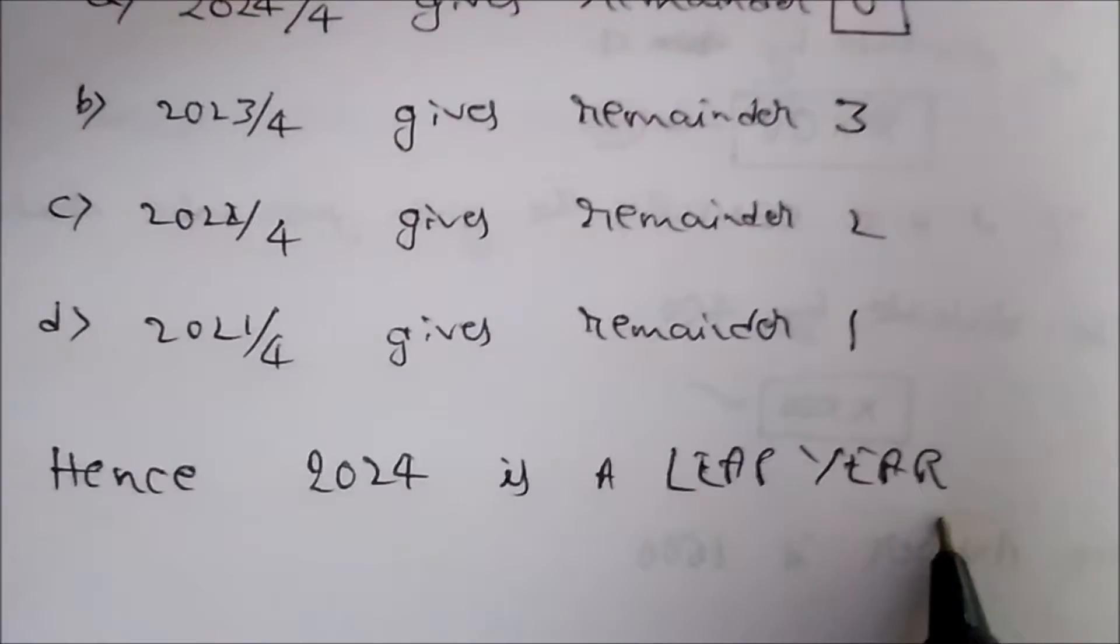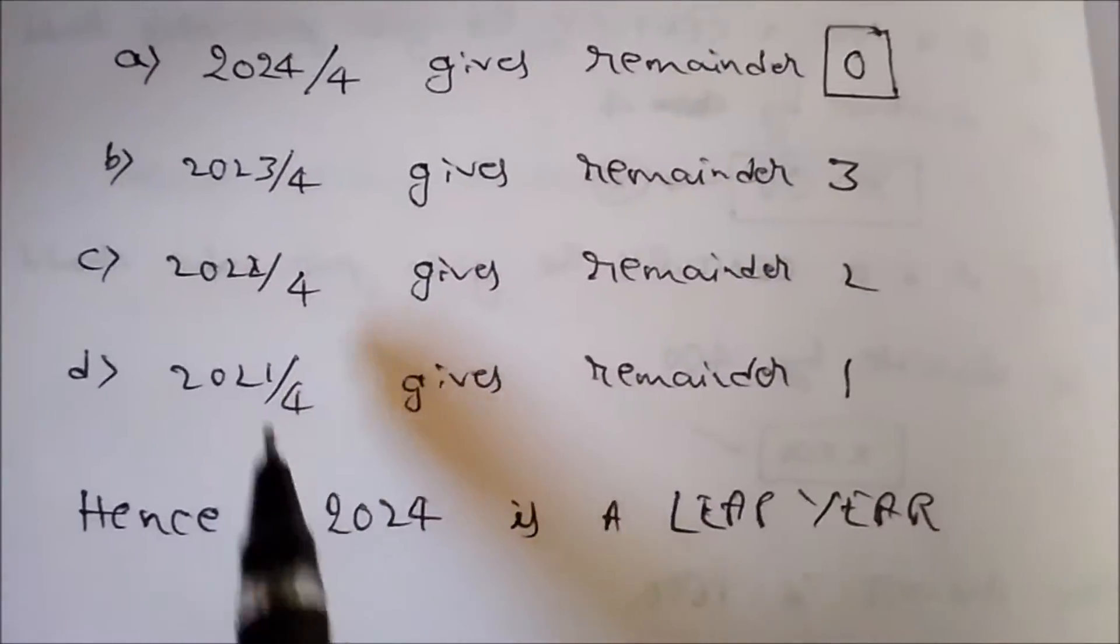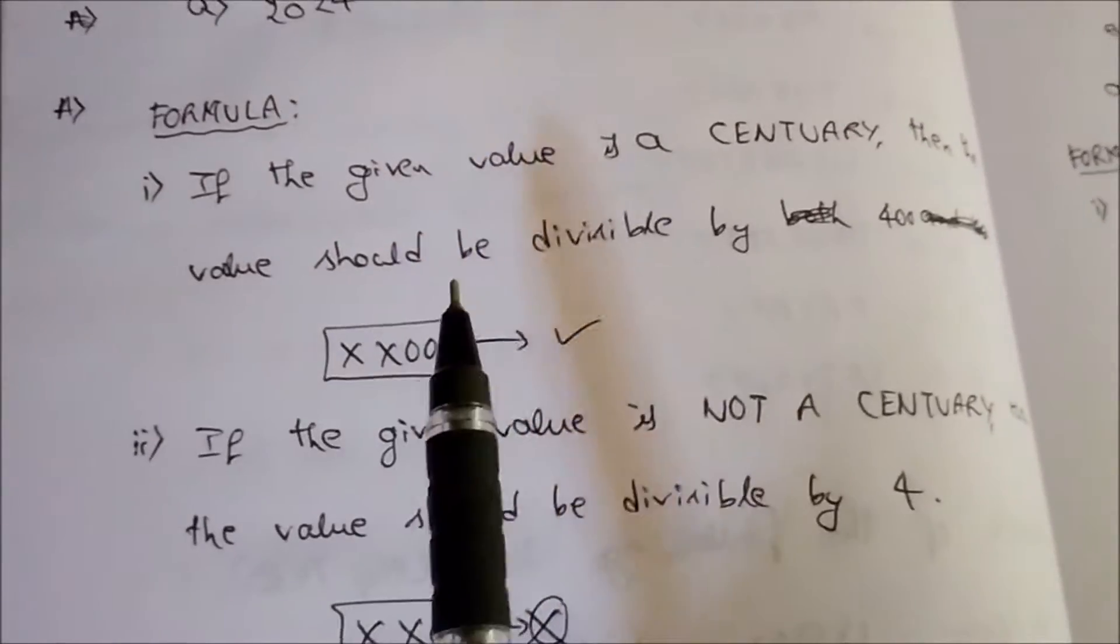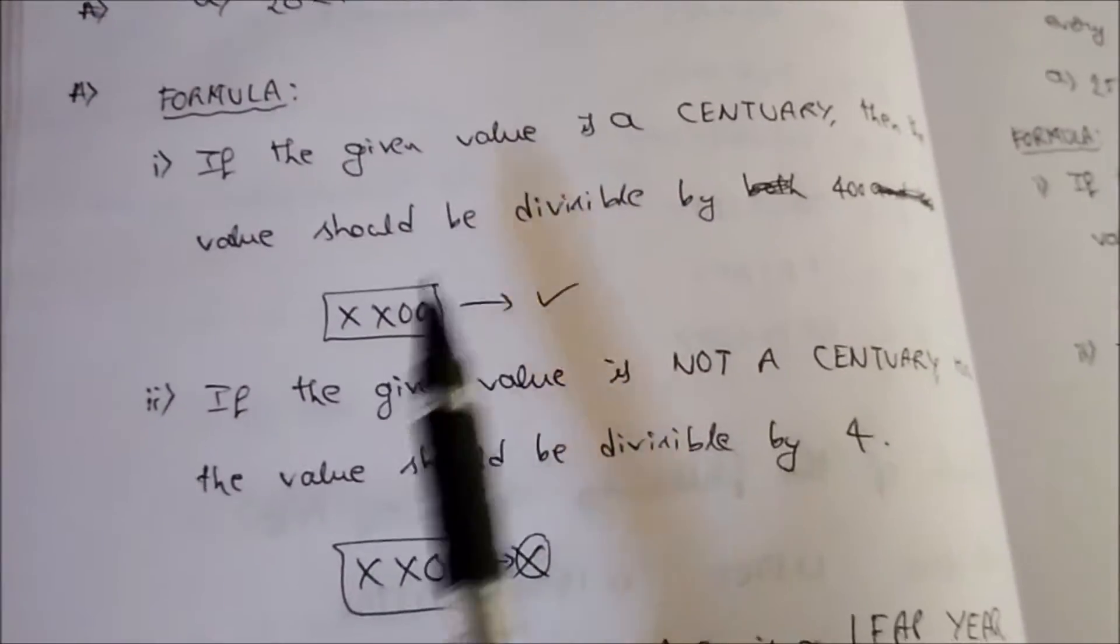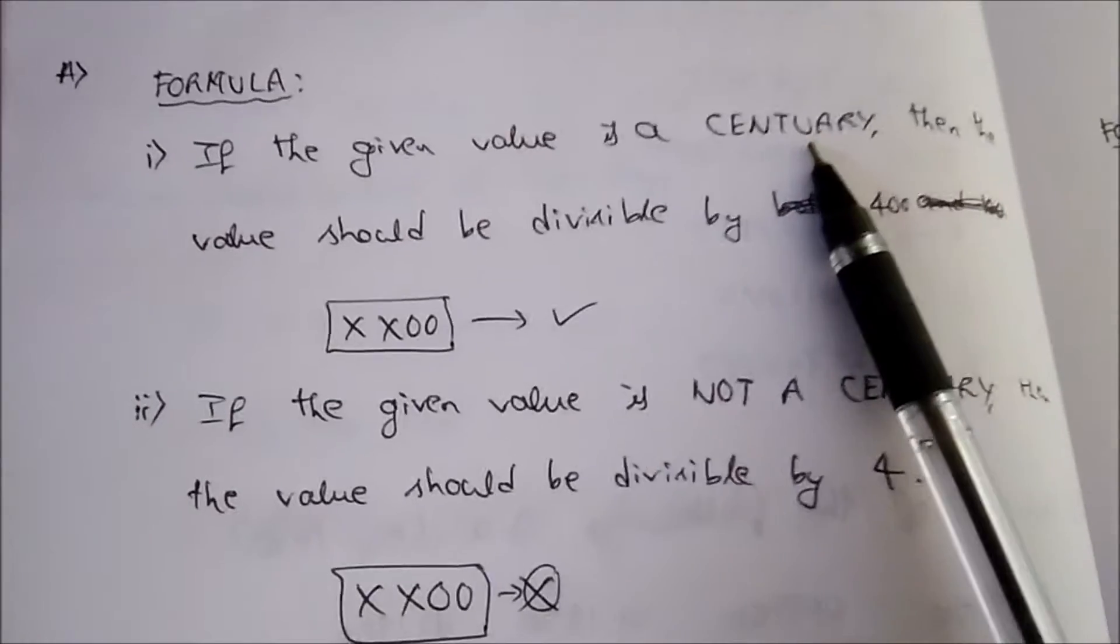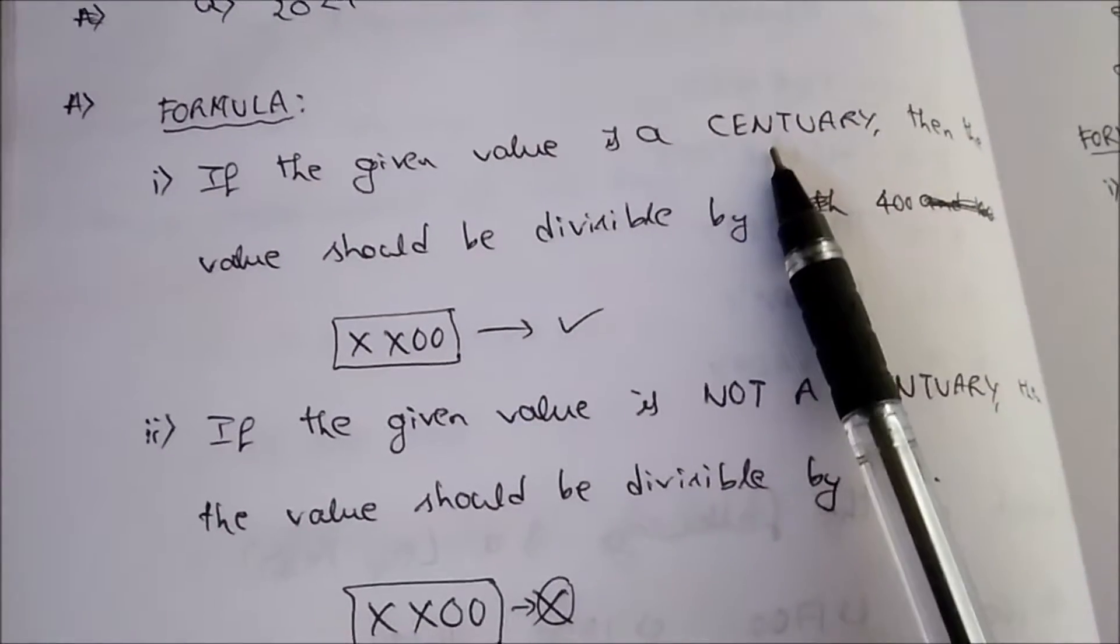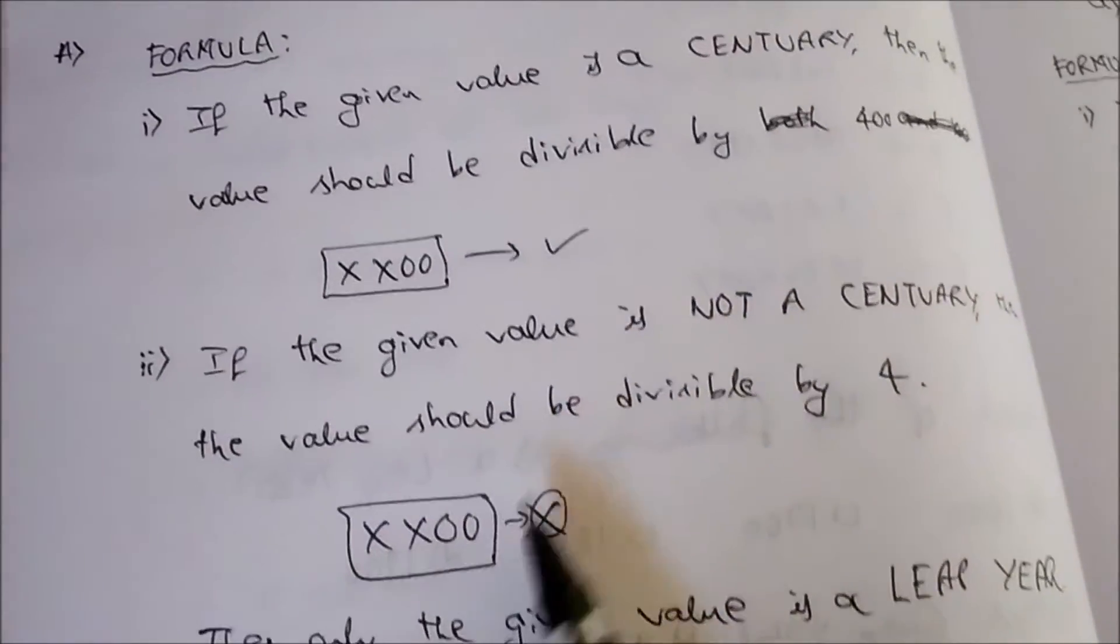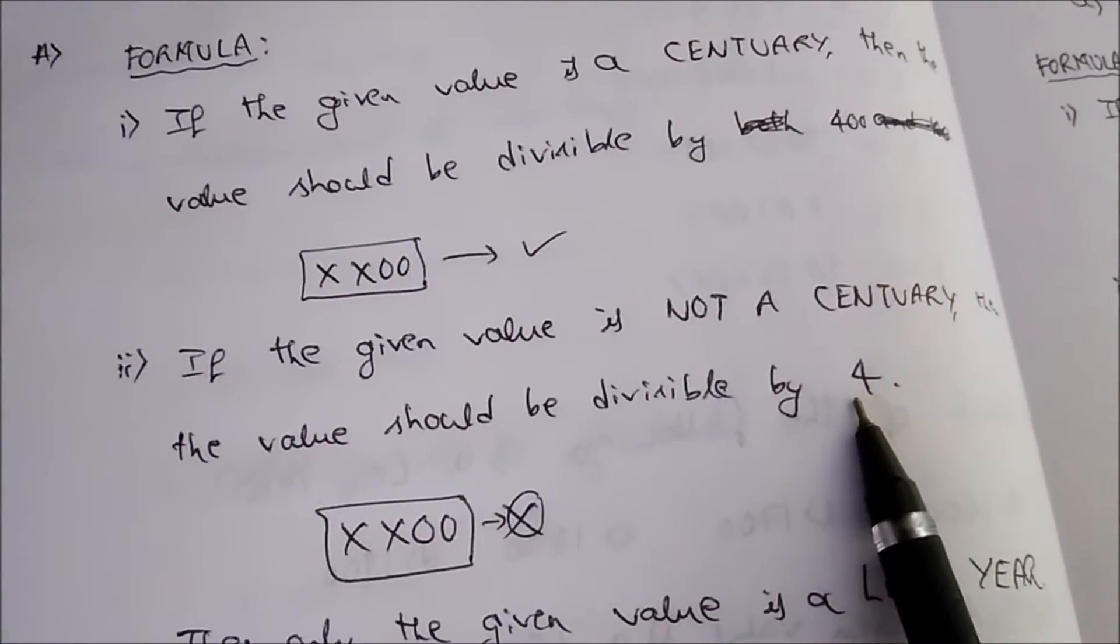And the rest of the values are not leap years. So to find whether a given value is a leap year or not, first we need to check whether it is a century or not. If it is a century, it should be divisible by 400. If it is not a century, it should be divisible by 4.